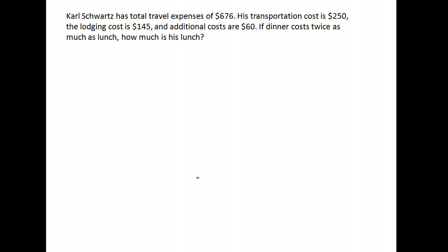Now we're going to do a little solving with these and see how this goes. Carl Schwartz has total travel expenses of $676. His transportation was $250, his lodging was $145, and he had additional costs of $60. If dinner is twice as much as lunch, how much is his lunch?